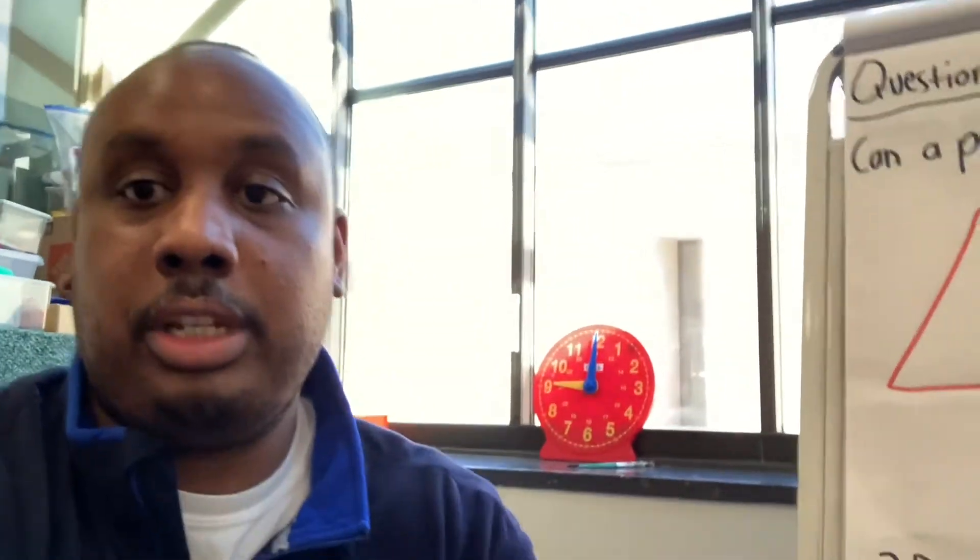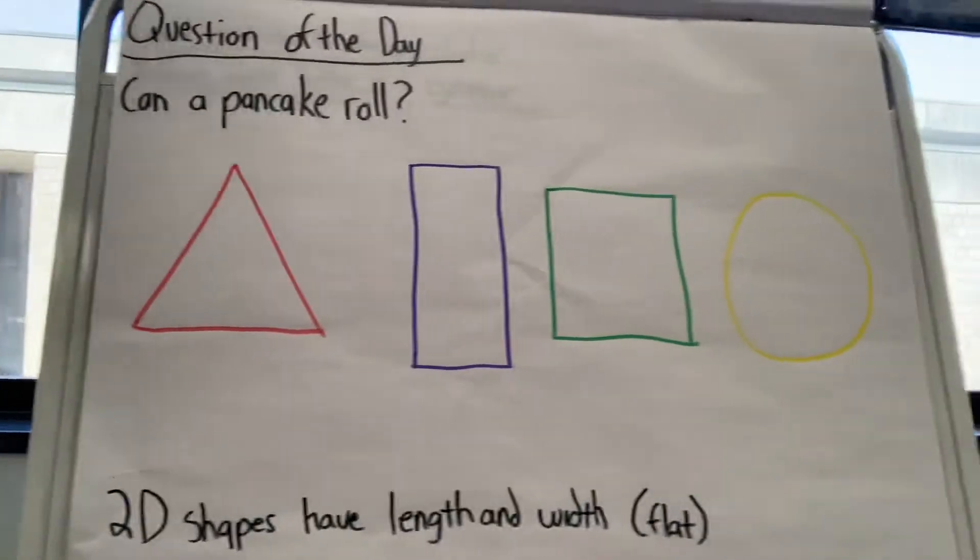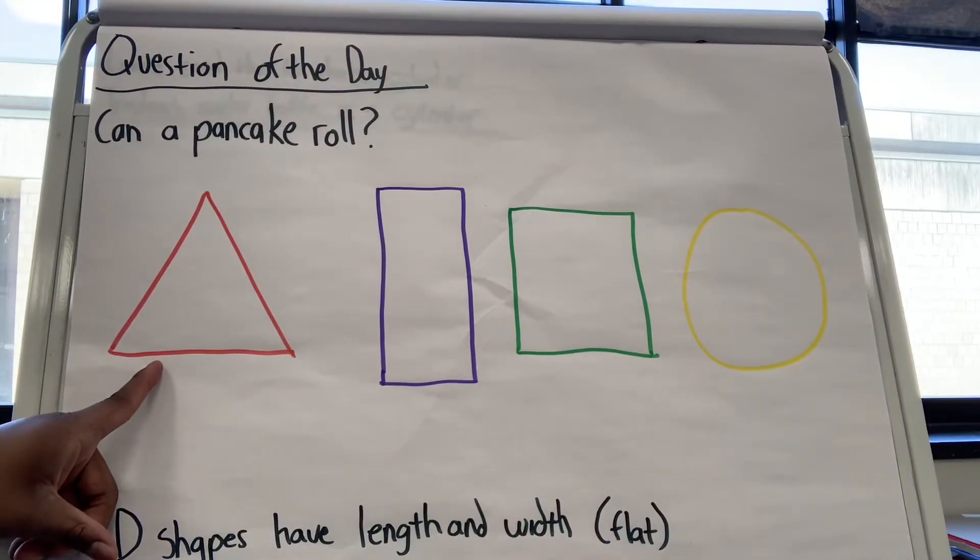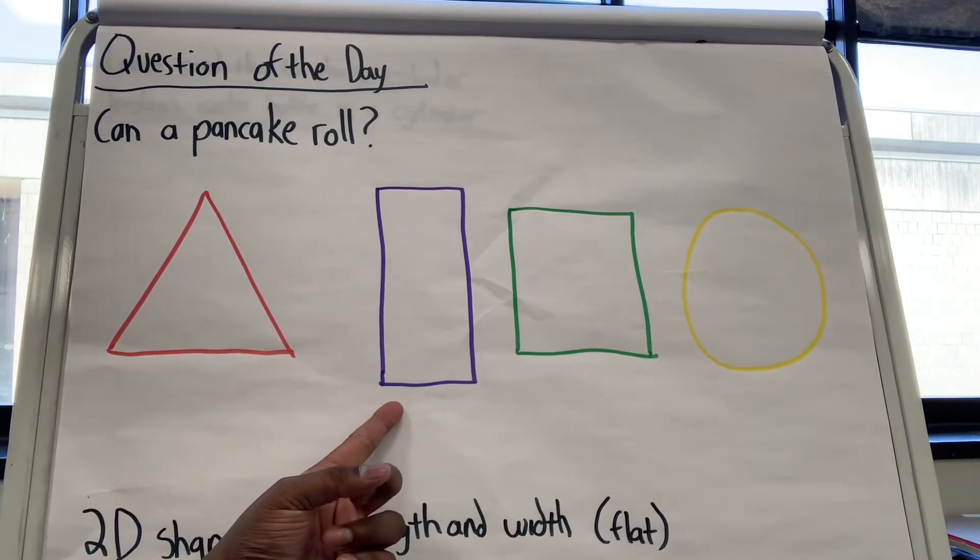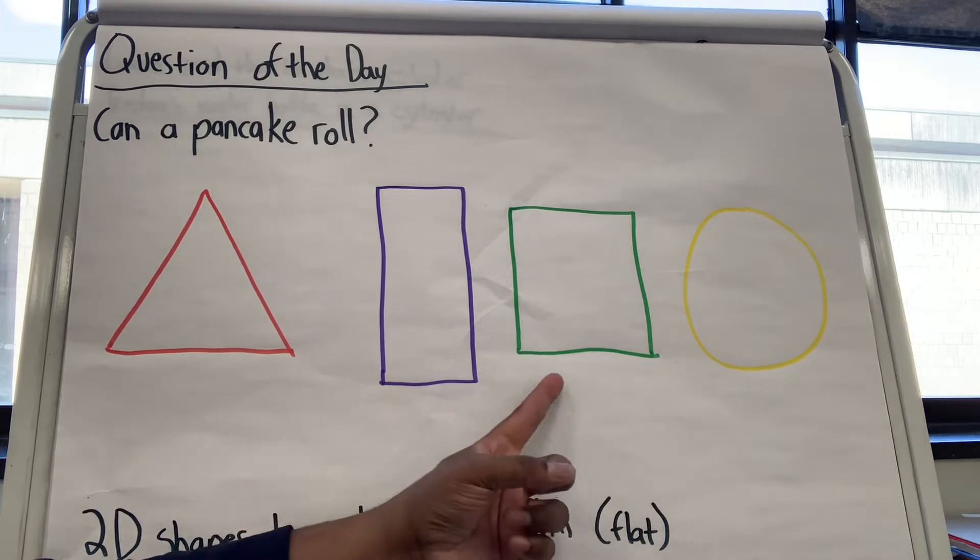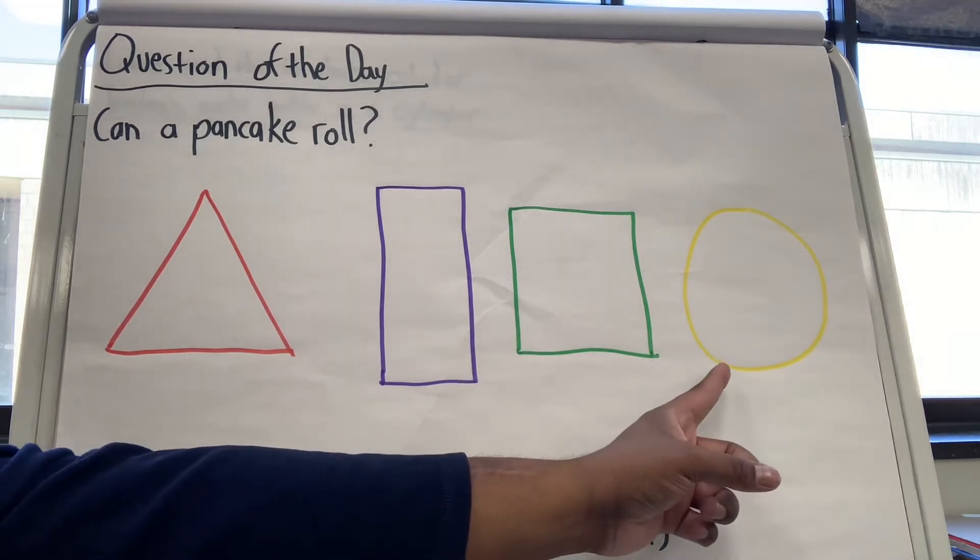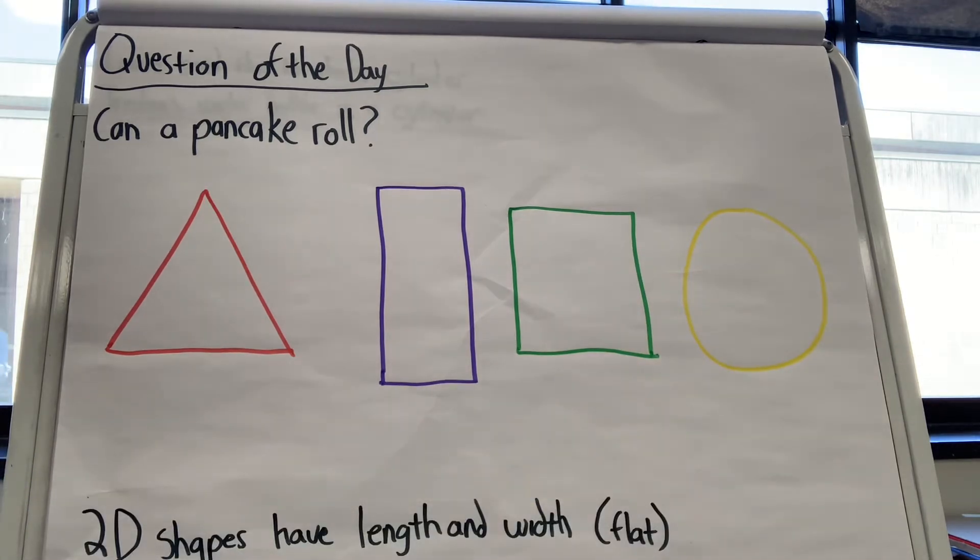So let's look at some 2D shapes first. What shape is this? A triangle. A rectangle. A square. A circle. Who knows why these are 2D shapes?